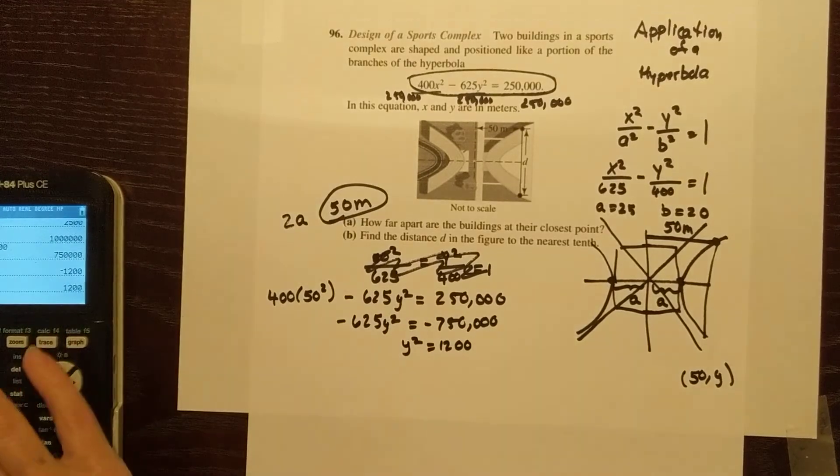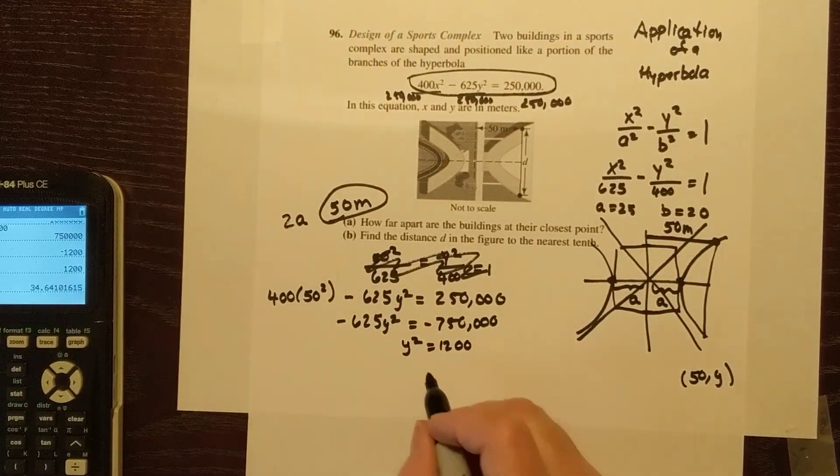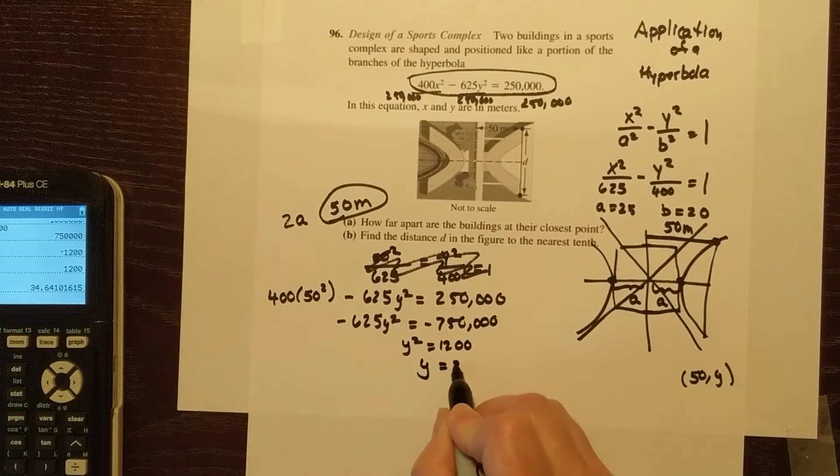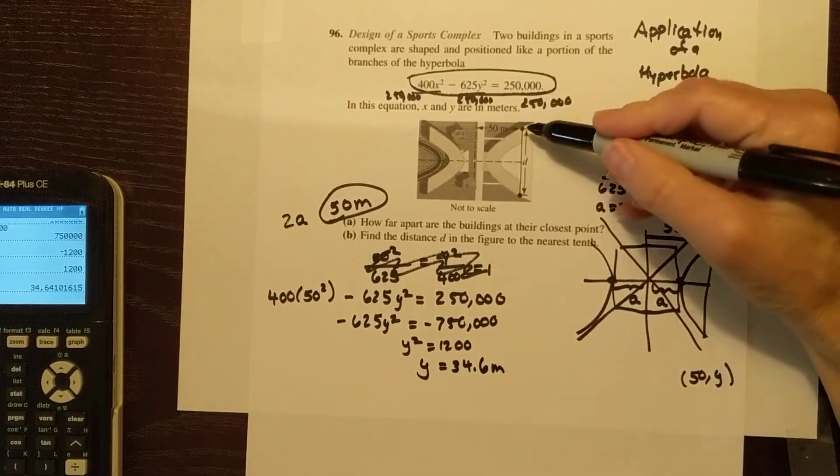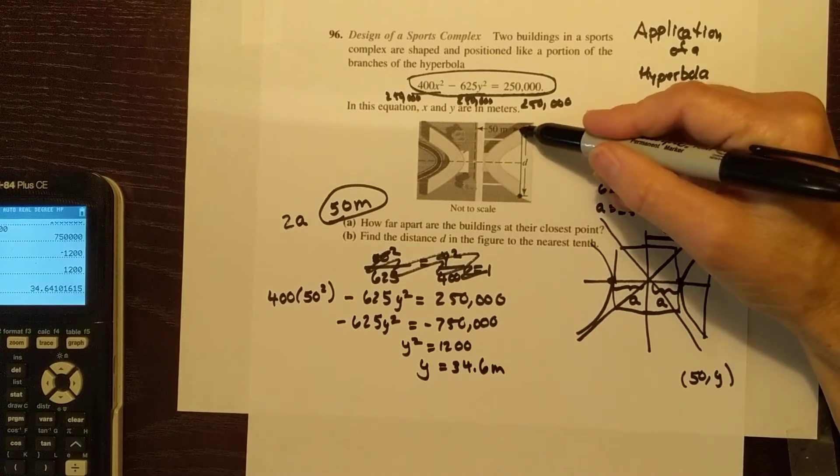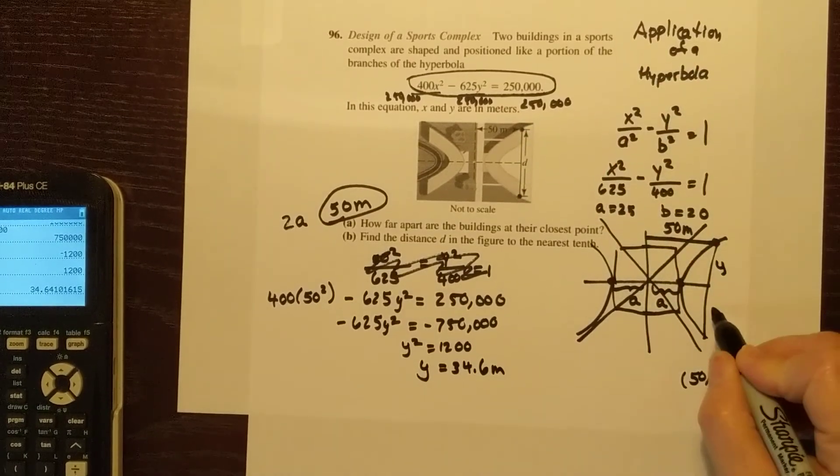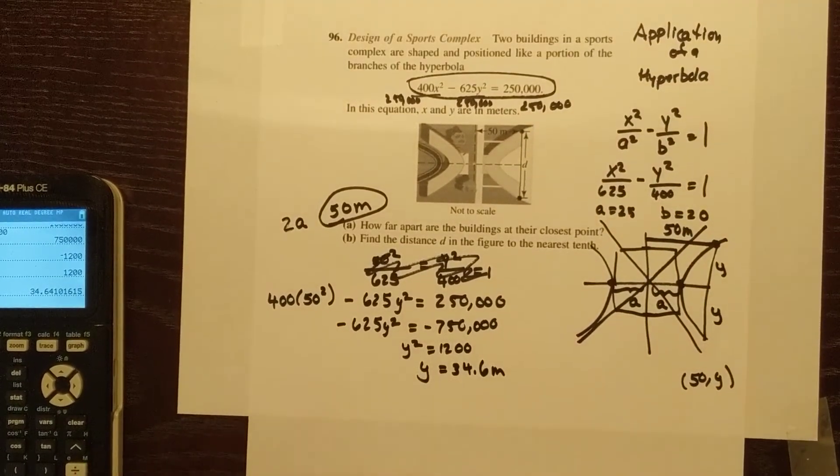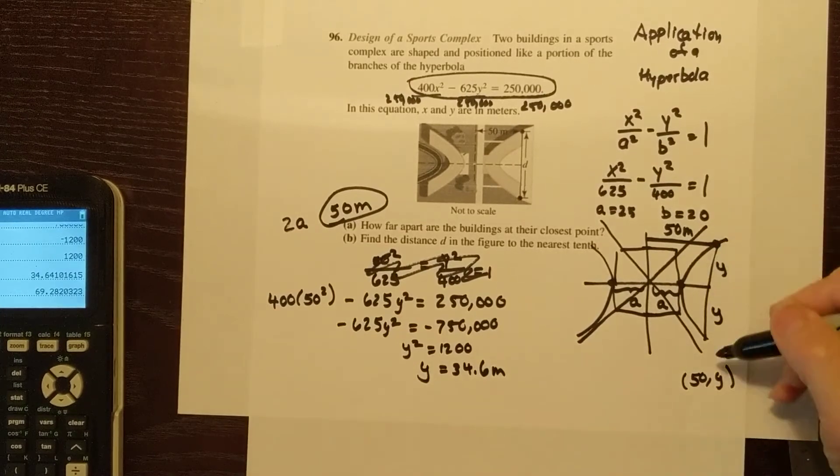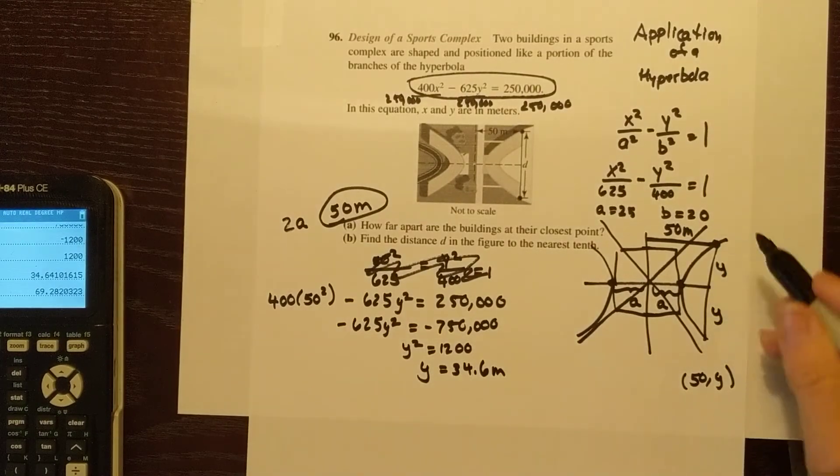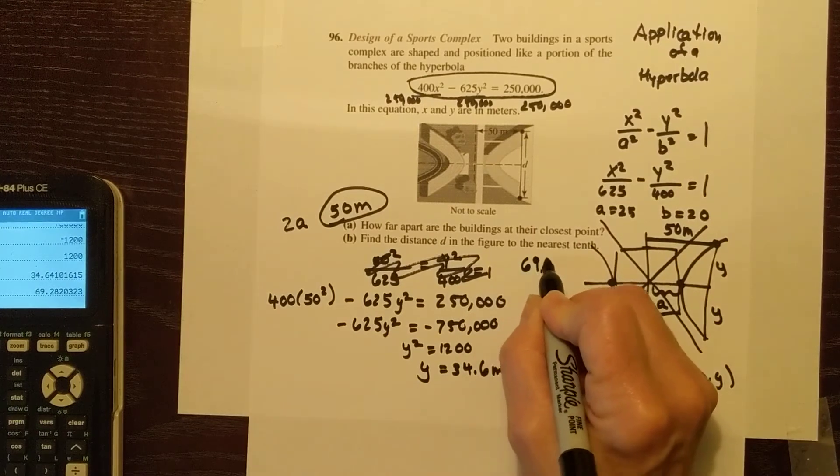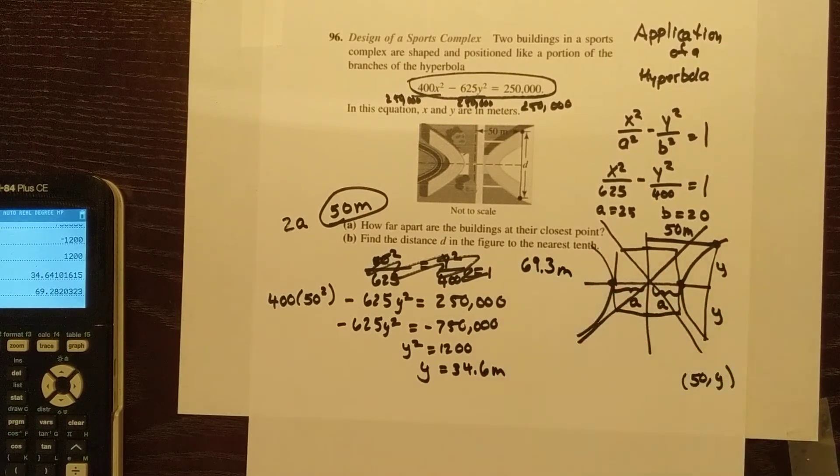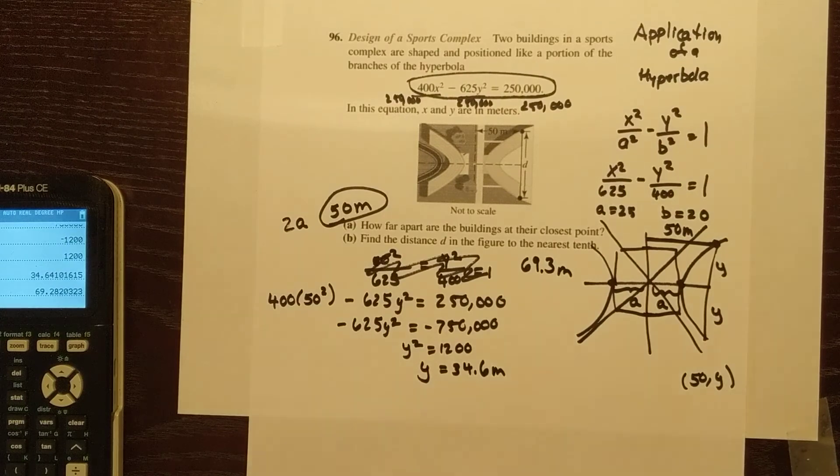And then I'm going to take the square root of that answer, and that's going to give me that y is 34.6 meters. This distance d, however, is y plus y, so I'm going to multiply that number by 2. And so the width across this branch is going to be, for answer b, about 69.3 meters. And that's how you would answer that one.